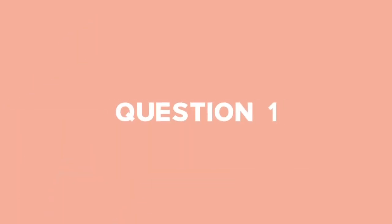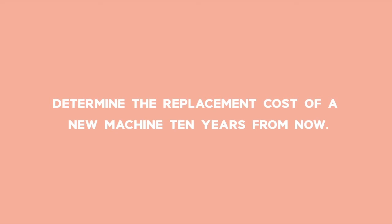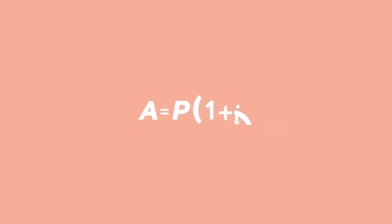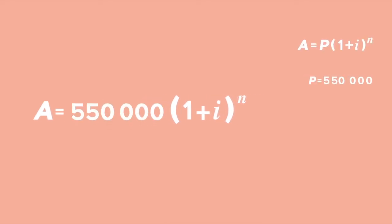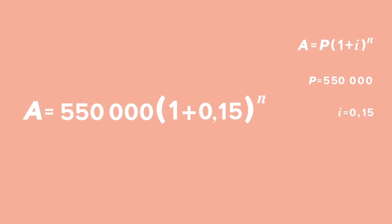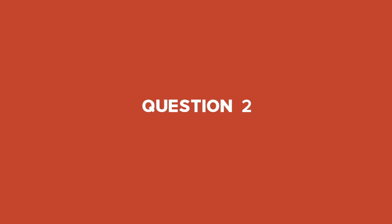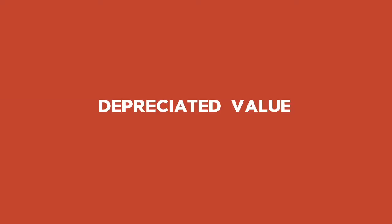For question 1, to work out the cost of the new machine in 10 years time, we use the compound interest formula. Substitute P with the current value of the machine, R550,000, and replace I with 0.15 and N with 10. You will then get a replacement value cost of the machine in 10 years.